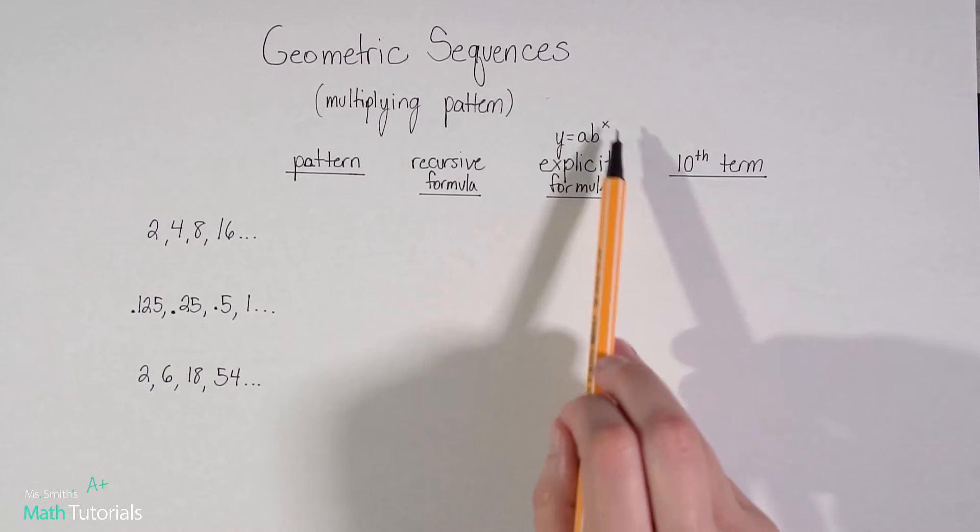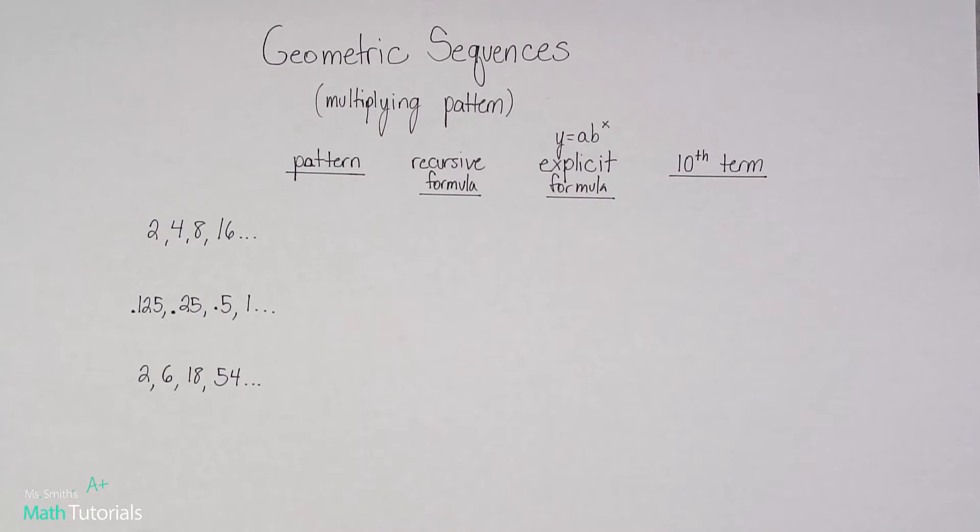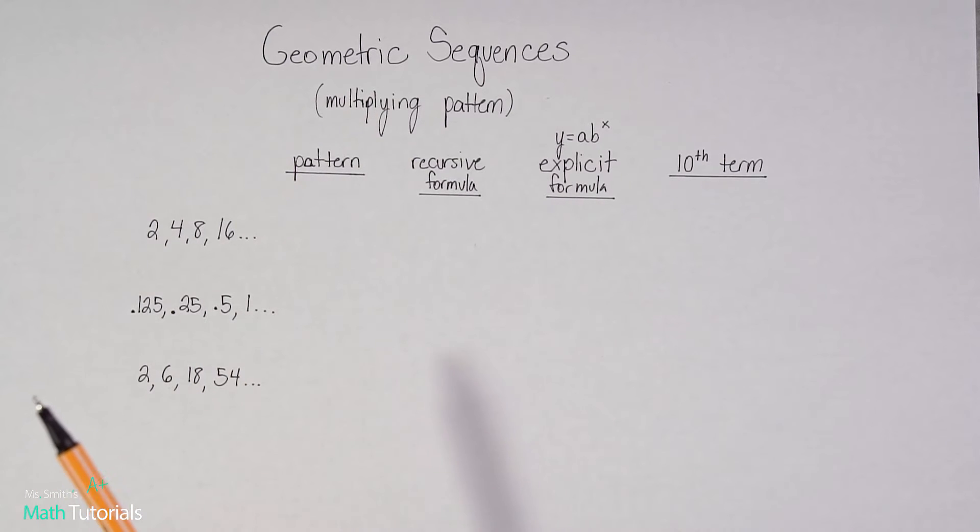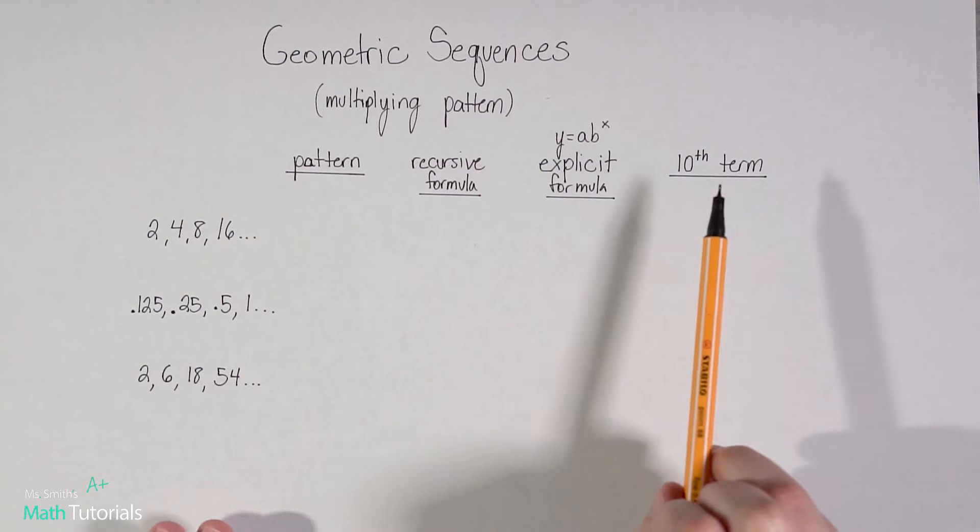So that's that new formula that we've been working on this unit. The major difference between the geometric and the arithmetic is our pattern and also our explicit formula. And for fun, we're going to find the 10th term.